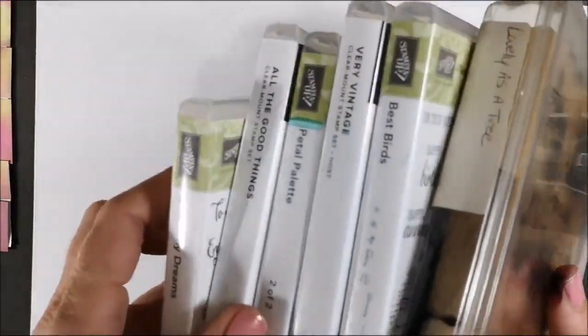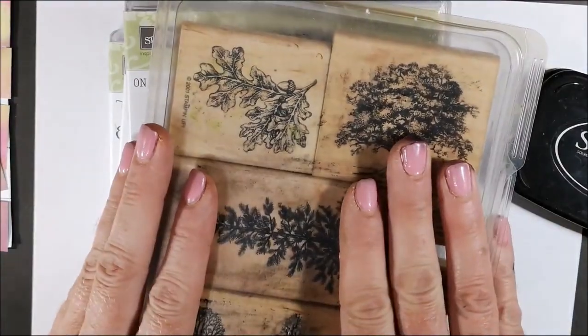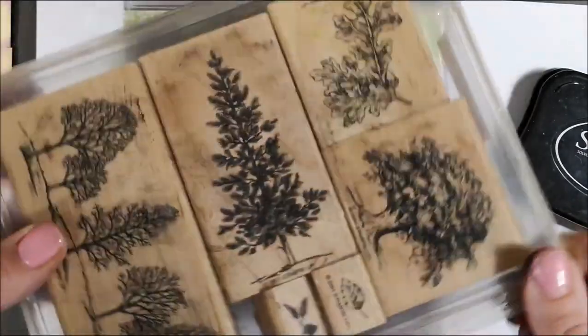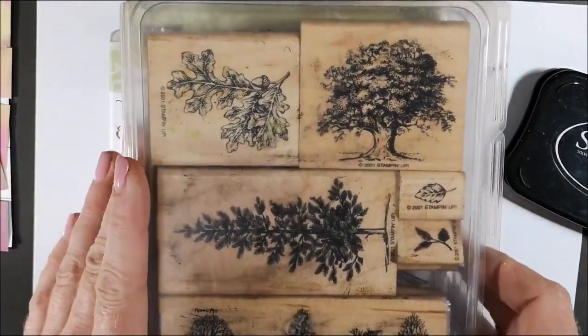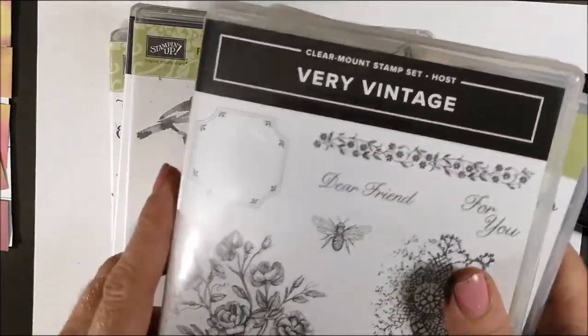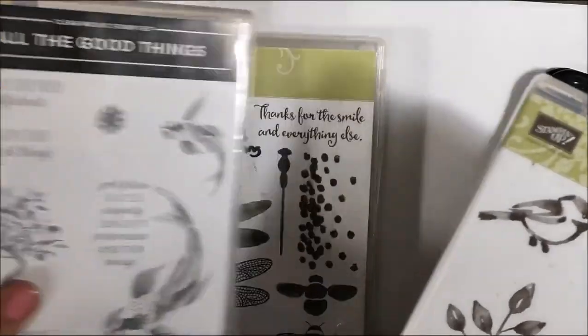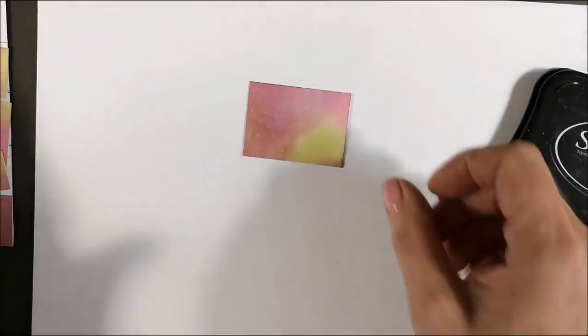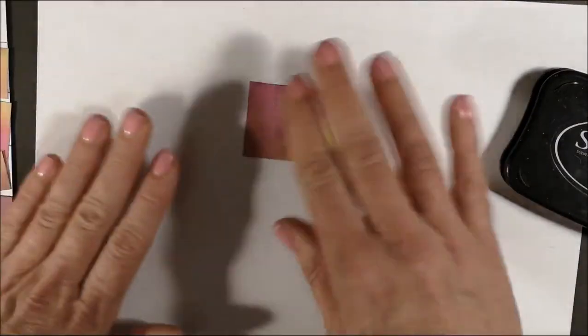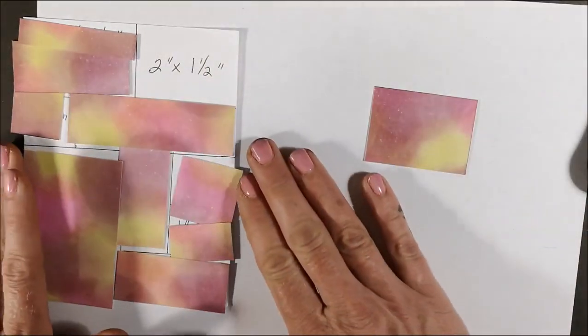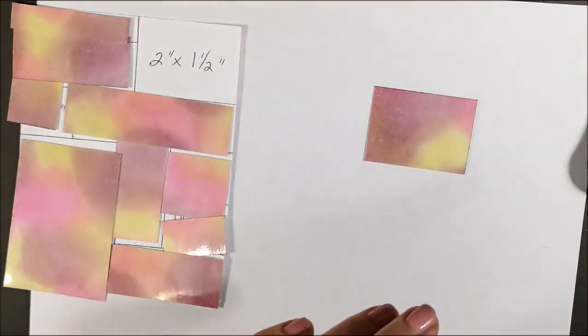Okay, I have pulled out a bunch of sets that are retiring and I'm trying to get as much use out of them before they're gone, including my lovely It's a Tree. It's one of my very first ever stamp sets when I became a demonstrator. I love it. So I'm going to use that one. I'm going to use Best Birds, Fairy Vintage. This is a beautiful host set available until the end of this month. Petal Palette, Dragonfly Dreams, and all the good things.